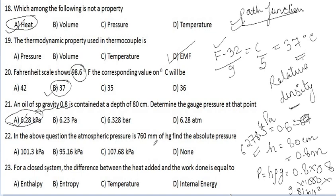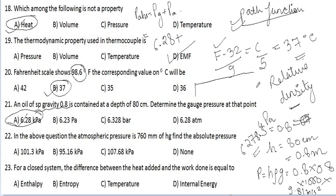If atmospheric pressure is 760 mm of Hg, find the absolute pressure. P_absolute = P_gauge + P_atmospheric. Gauge pressure is 6.28 kPa; converting 760 mm Hg: (0.760 m × 13600 × 9.81) gives atmospheric pressure. Adding 6.28 kPa, the absolute pressure comes out to be 107.68 kilopascal.